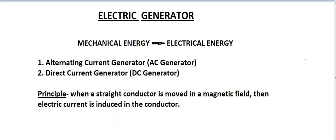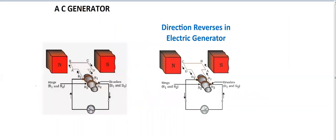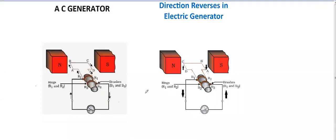The first one we are discussing is the alternating current generator or AC generator. Let us consider the construction of AC generator. This is the diagram of AC generator. Here, a rectangular coil ABCD is placed between the poles of a strong magnet. Two ends of this coil ABCD are connected with two slip rings R1 and R2. These slip rings are connected with the galvanometer to detect the direction of the current induced in the circuit.